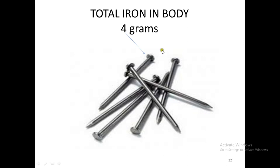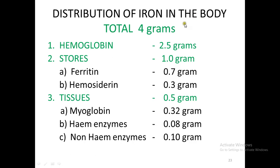The total amount of iron in the human body is only four grams — enough to make only one iron nail. How is this four grams distributed? Two and a half grams is found in hemoglobin, one gram is found in stores in the body, and half a gram is found in the tissues. In the stores, iron exists in two forms: ferritin — the more readily soluble form — and hemosiderin — the less readily soluble form. In tissues, half a gram of iron is present, most of it in myoglobin of our muscles: 0.3 grams in myoglobin, 0.08 grams in heme enzymes, and 0.1 grams in non-heme containing enzymes.